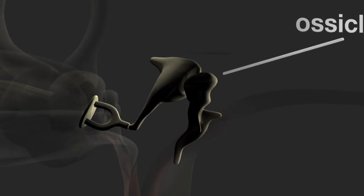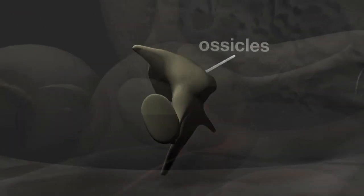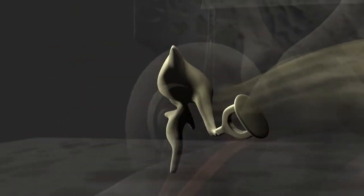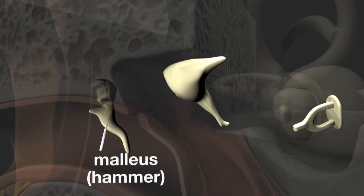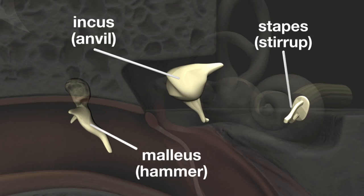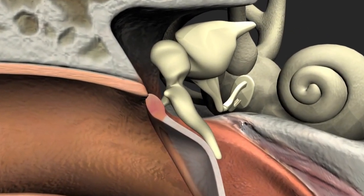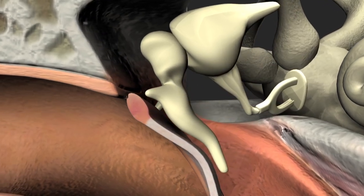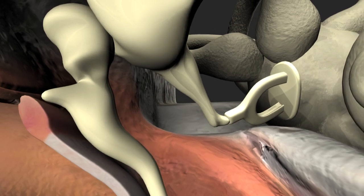These are connected in a chain across the middle ear from the tympanic membrane to the entrance of the cochlea called the oval window. The ossicles are called the malleus (the hammer), the incus (the anvil), and the stapes (the stirrup). The handle of the malleus is attached to the tympanic membrane and the base of the stapes, known as the stapes footplate, sits loosely in the oval window of the cochlea.